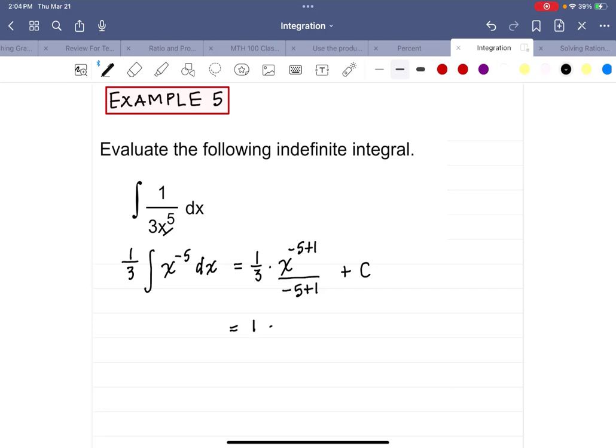Now make sure you keep these lined up. That first numerator is a 1. And your second numerator is x to the negative 4 over 3 times negative 4. So that's going to give me x to the negative 4 divided by negative 12 plus c.